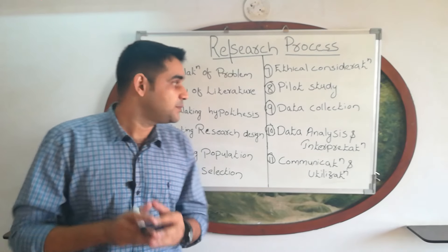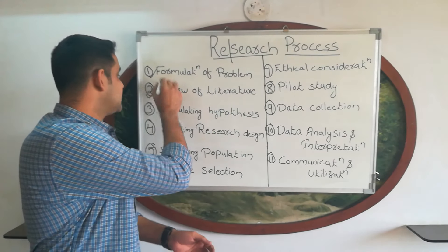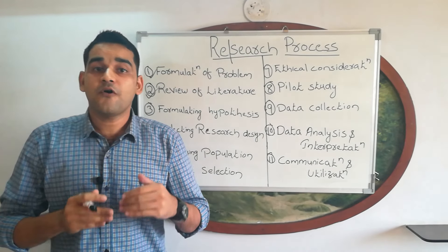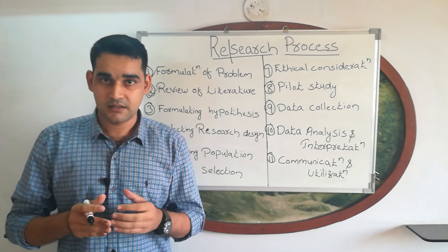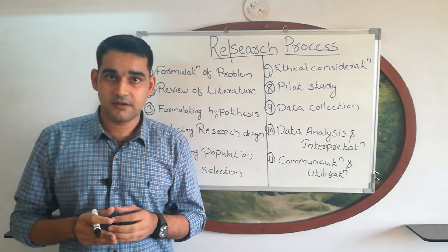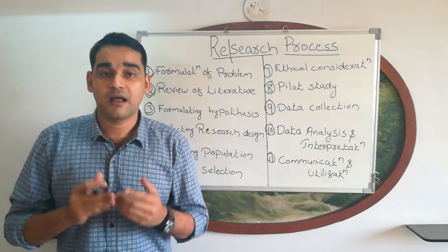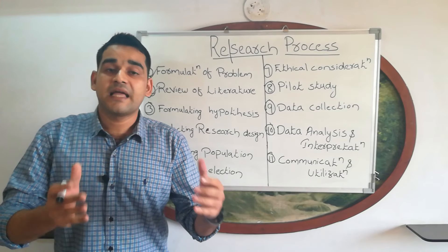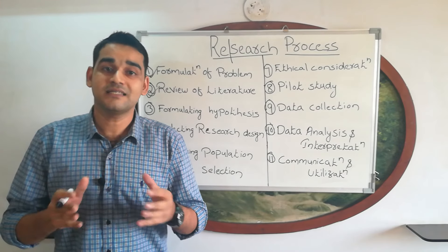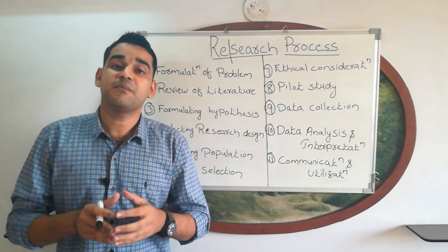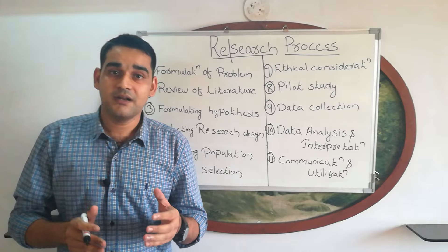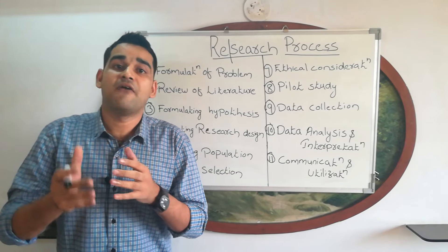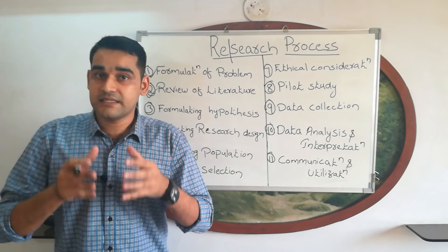The second step of the research process is review of literature. Review of literature means you are collecting knowledge — different knowledge from books, libraries, magazines, articles, and online through the internet. You are collecting different knowledge regarding HIV, AIDS, and their medicines. It will differ according to your study and your problem. So in the second step, you are collecting the available knowledge.